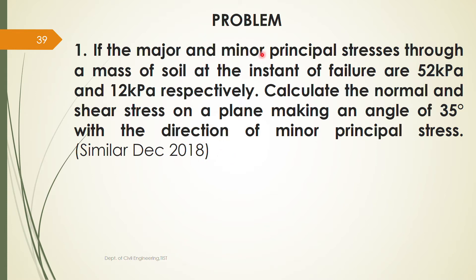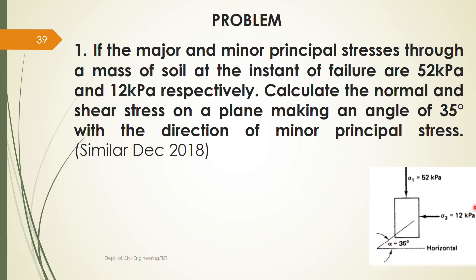In this question, σ₁ and σ₃ are given in kPa and we need to calculate the normal stress σ and shear stress τ on a plane making an angle of 35 degrees with the direction of the minor principal stress. σ₃ is acting in the horizontal direction, so the direction of the minor principal stress is horizontal.